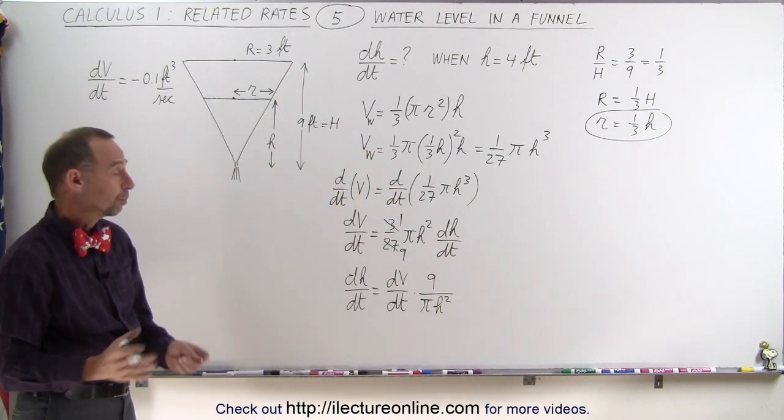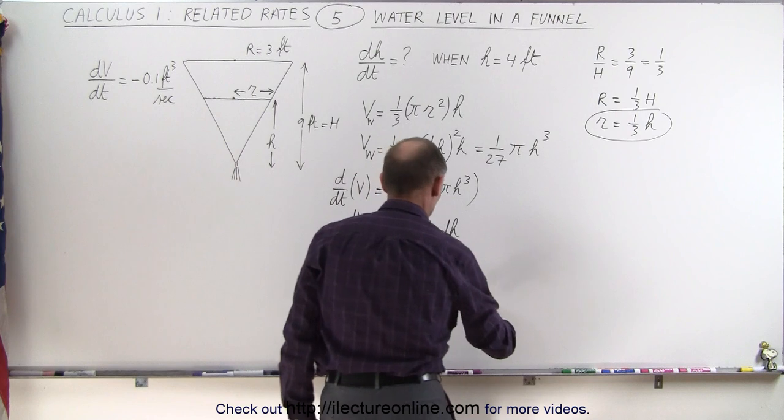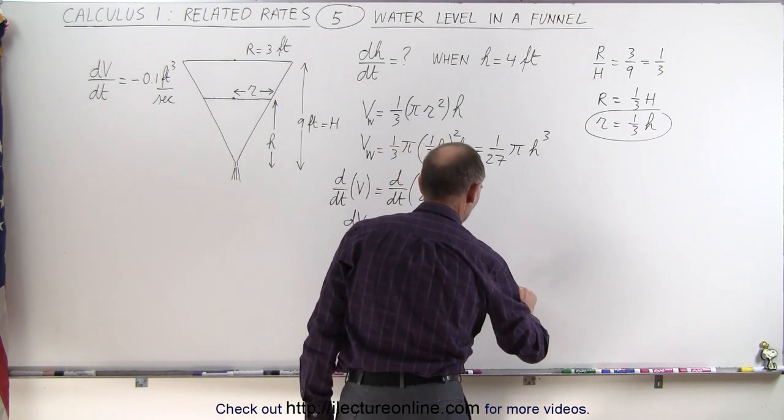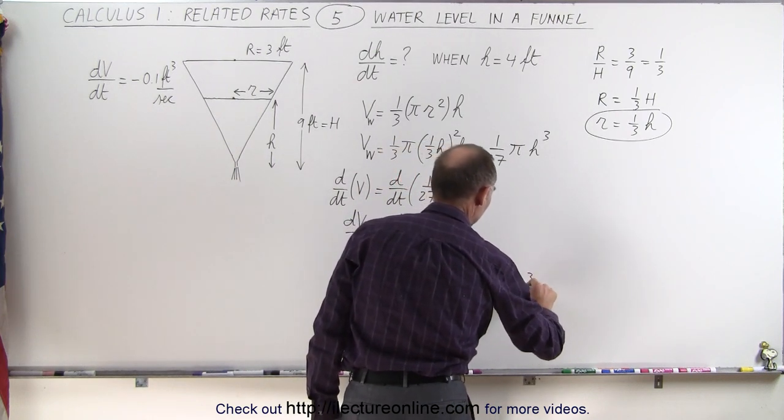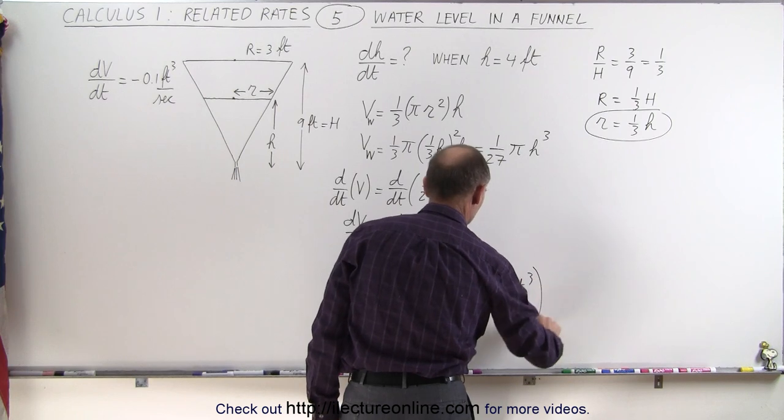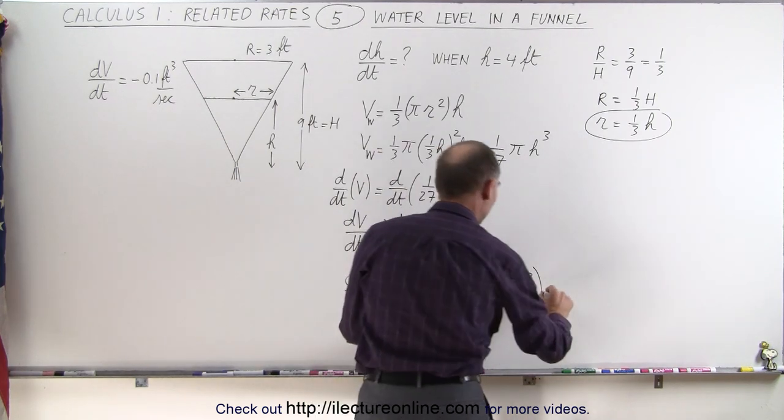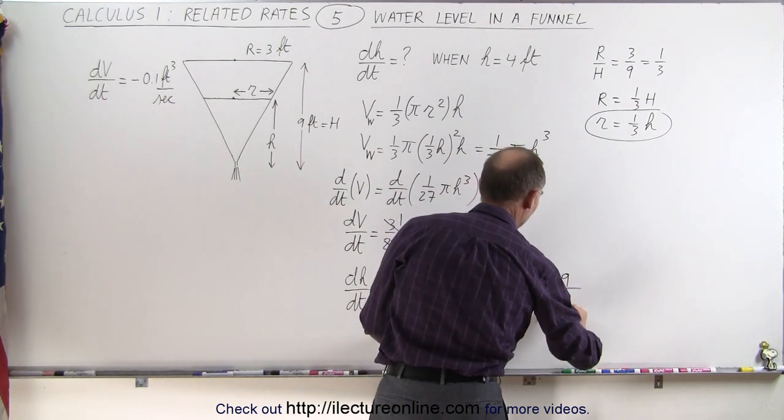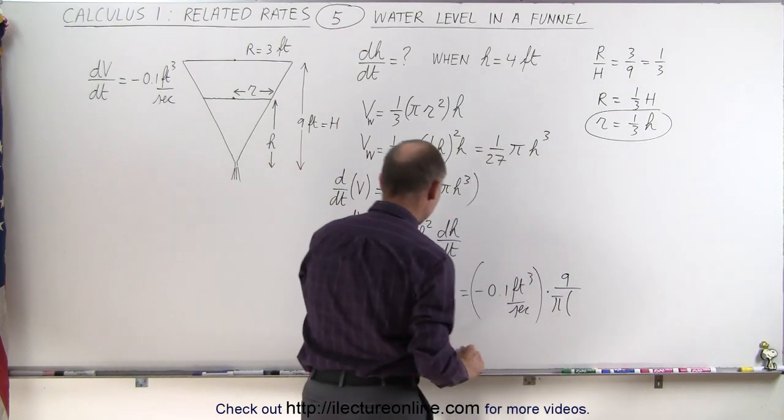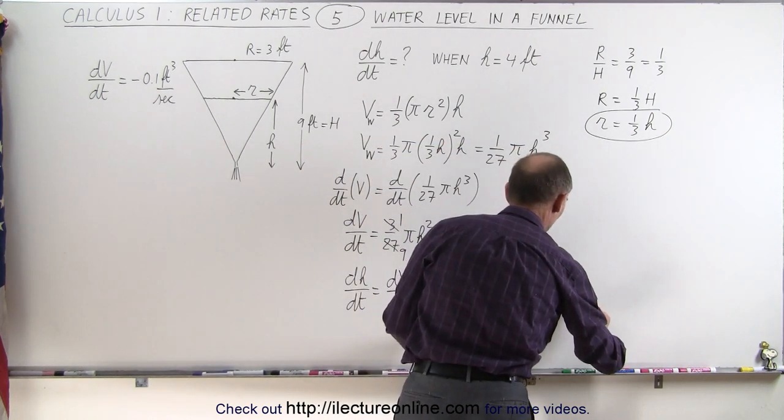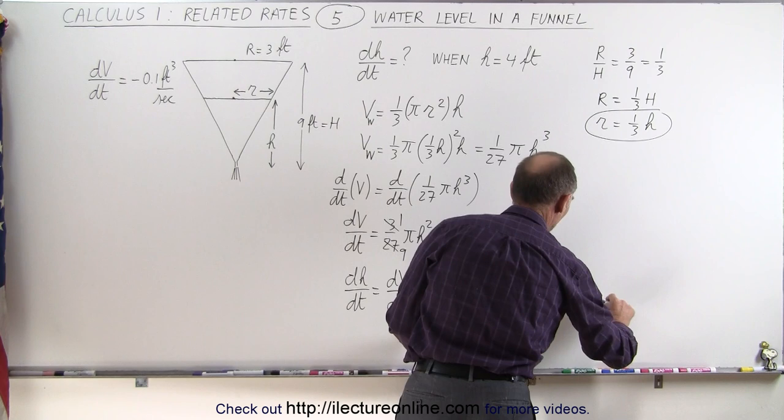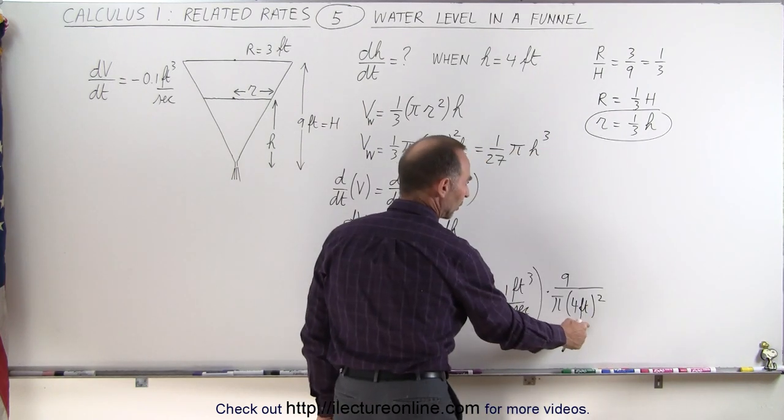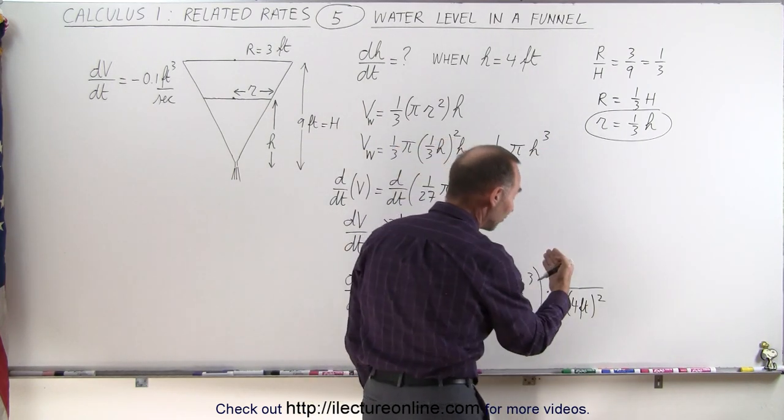This equals negative 0.1 cubic feet per second. We have to multiply that times 9 divided by pi and divided by the height squared, which is 4 feet quantity squared. Notice that the feet squared will cancel out the feet cubed and leave us with feet per second.